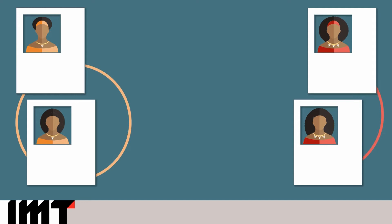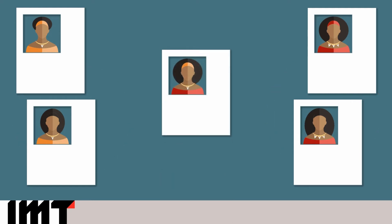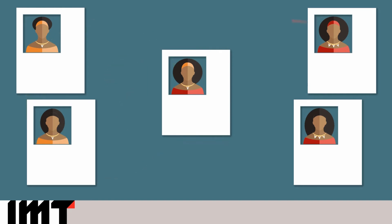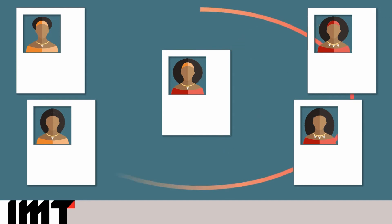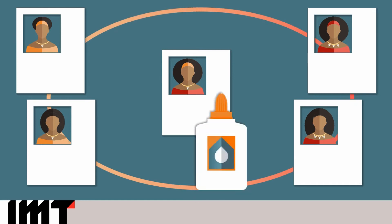For example, here we have two records that are linked as part of the same entity, and another two records that are linked as part of the same entity. But these four records are not considered the same person — they are two different people. At some point, we're introducing a fifth record which seems to have qualities of both entities. Should this record link to the entity on the left, or should it link to the entity on the right? What if it decided to link to all of these records? It would end up gluing the records on the left to the records on the right, and that could be an incorrect join.